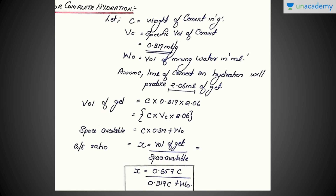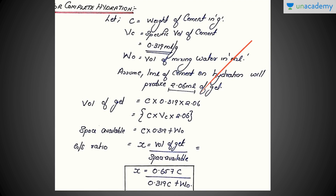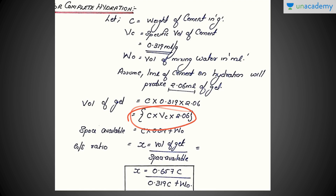Let C equal the weight of cement in grams. Let VC equal the specific volume of cement, which is 0.319 ml per gram. Let W₀ be the volume of mixing water in ml. Now, we assume that 1 ml of cement on hydration will produce 2.06 ml of gel. This is an assumption, just as in any derivation. Hence, the volume of gel equals C × VC × 2.06, that is, C × 0.319 × 2.06.